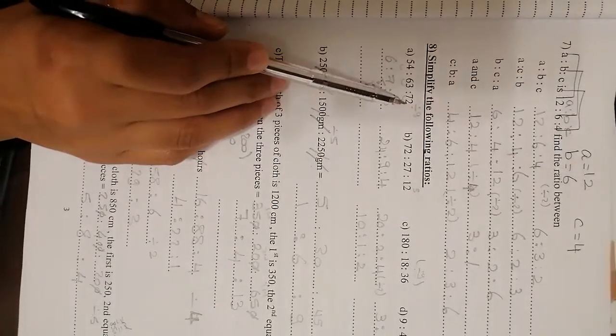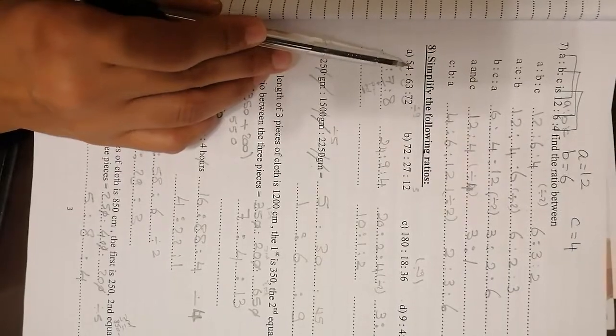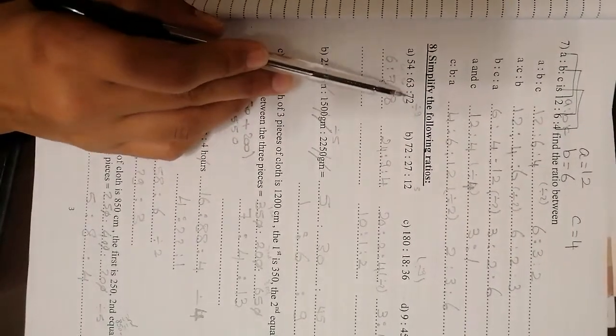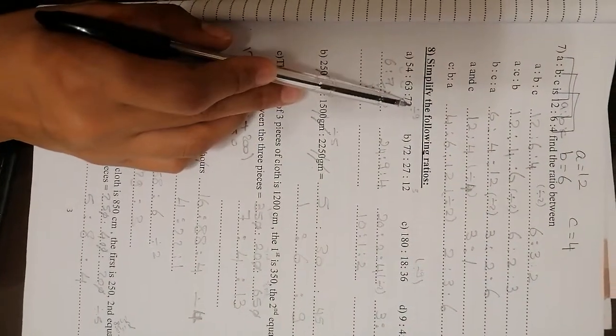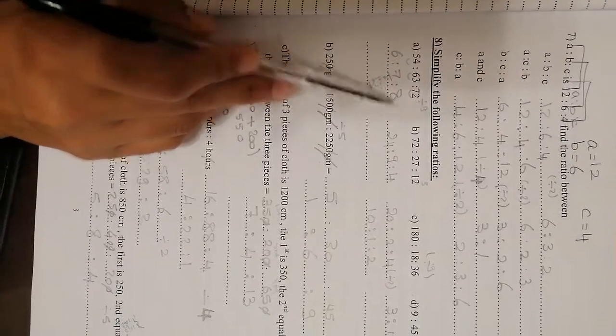Here I want to simplify the following ratios, 54, 63 and 72. Let's see. If you add these two digits together, the answer will be 9. And you add these two, it will be 9. And here it will be 9, so it is divisible by 9. So every number, you are going to make it divided by 9. The answer will be 6 to 7 to 8.